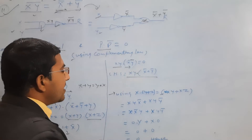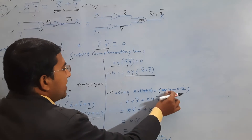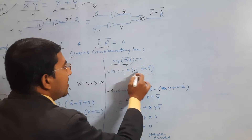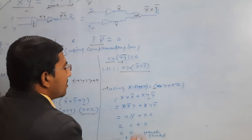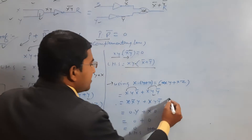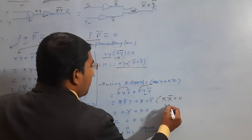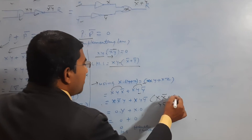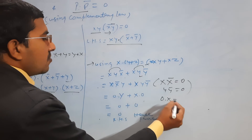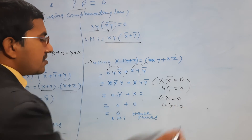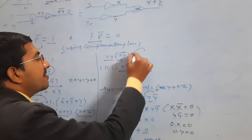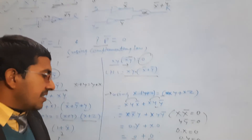Using the distributive law x(y + z) = xy + xz, we can write this statement as xyx' + xyy'. Now x · x' = 0 and y · y' = 0. Then we get 0 · y + x · 0. Since 0 · x = 0 and 0 · y = 0, and 0 + 0 = 0, this equals the LHS which equals 0. Hence proved.